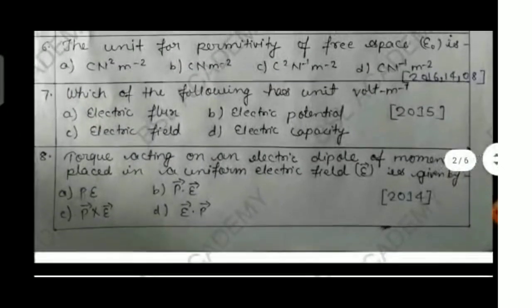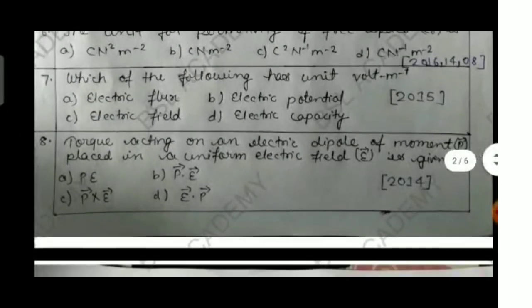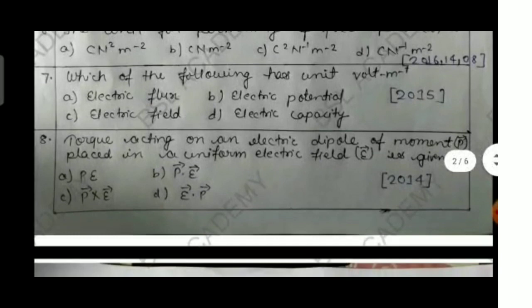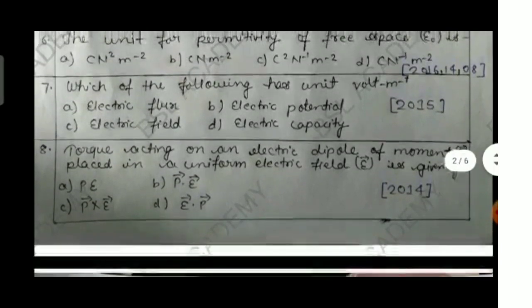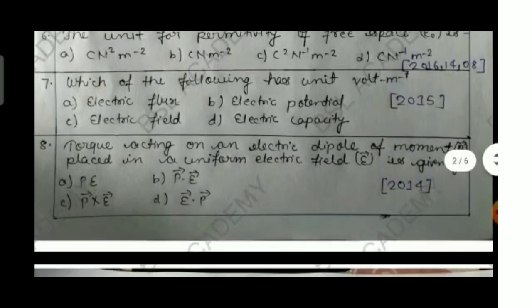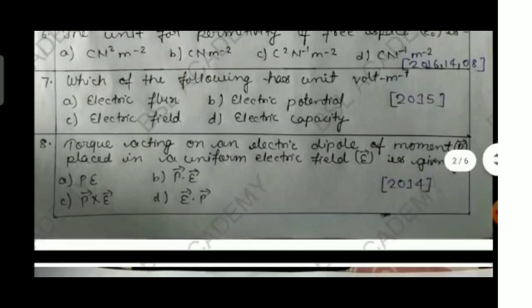This is an important objective question. Question number seven: which of the following has the unit volt per meter? Option A: electric flux, option B: electric potential, option C: electric field, option D: electric capacity. This was asked in 2015.